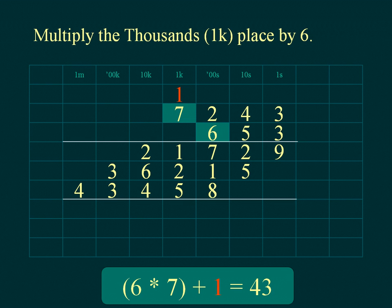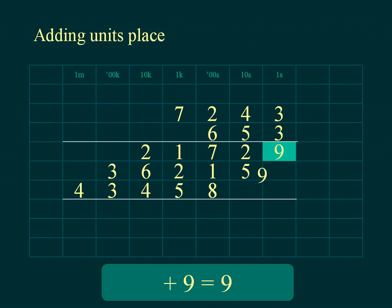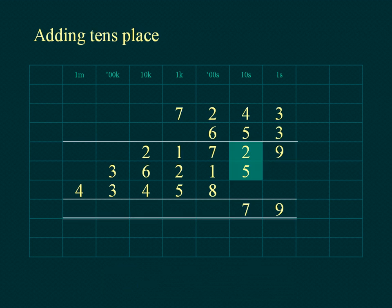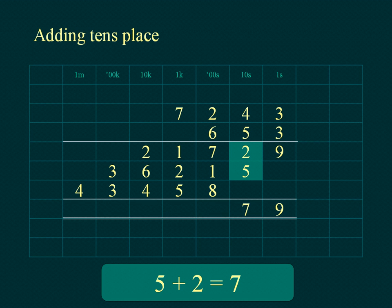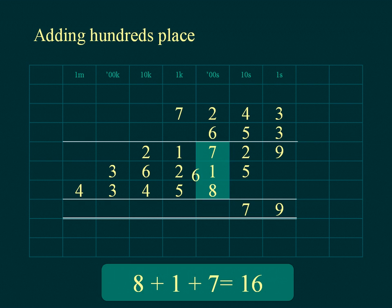Add the products of the multiplication. Add the units column and place the sum under the units on the total line. Add the tens column, then add the hundreds column and place the units of the result below the line in the hundreds place.